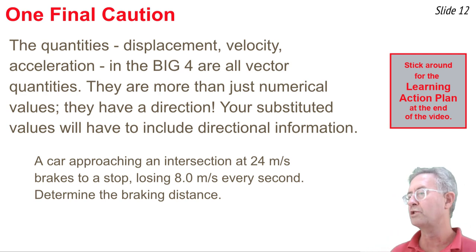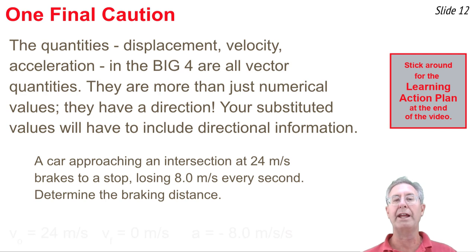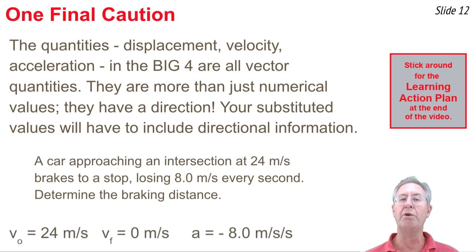For instance, here you see that a car is approaching an intersection at 24 meters per second, and it breaks to a stop. So I know an original velocity, and I know a final velocity. And I'm told the car is losing 8 meters per second every second. Determine the braking distance. So when I write down my known variable values, I'm going to have to be very careful because this acceleration value is a negative 8 meters per second per second. And so when I do this problem, it's important that I substitute in negative 8 in the place of a when solving for my unknown distance.